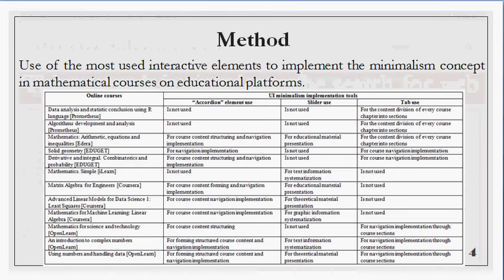When studying the question of using minimalism while developing user interface for online courses, we analyzed several mathematical courses published on educational platforms: ATELUS, ADERA, EDUGET, ILEARN, Coursera, and the Open University. While analyzing courses on the mentioned platforms, we considered whether the user interface corresponded to modern web design trends and determined the types of interactive elements most used to implement the minimalism concept. The deductive approach to content analysis of mathematics courses helped to choose the popular elements used in web design to achieve minimalism.